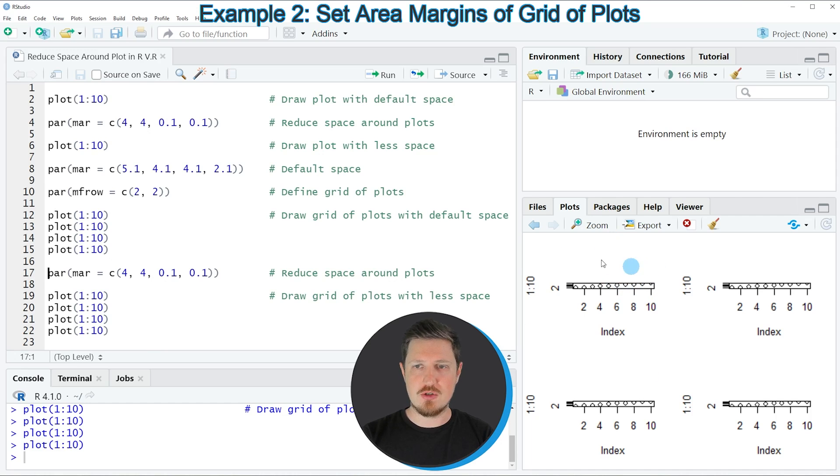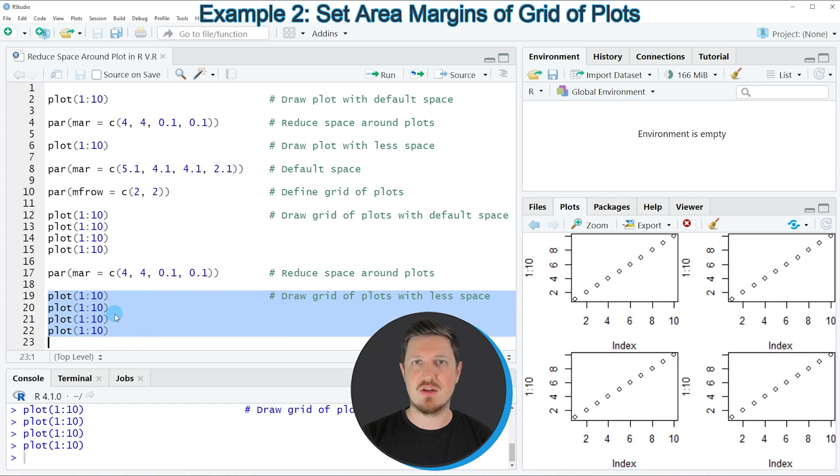If we want to reduce the space around these plots, we can again use the par function, as you can see in line 17. In this line of code, I'm using basically the same syntax as in line 4. If you run line 17, our options are updated once again. Then in lines 19 to 22, I'm drawing four plots again. After running these lines of code, you can see that our grid of plots has been updated. And as you can see, the space around our plots has been reduced heavily.